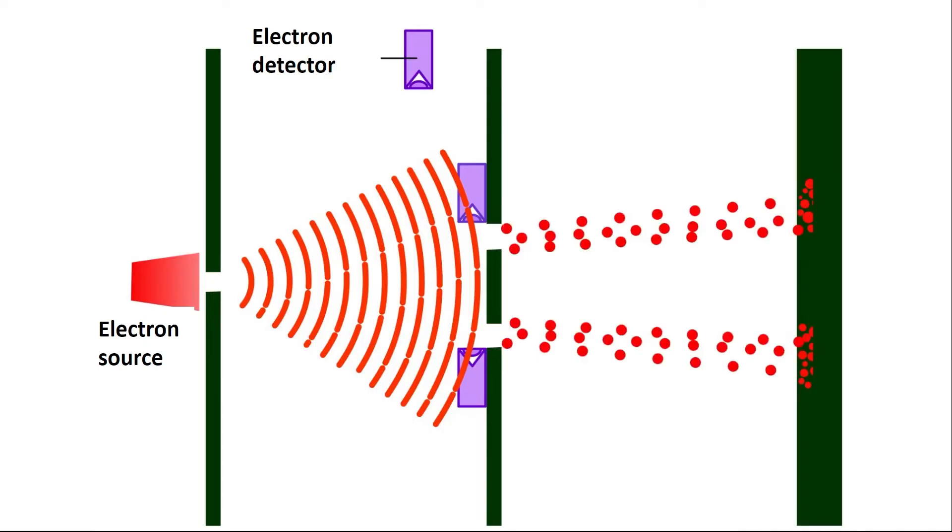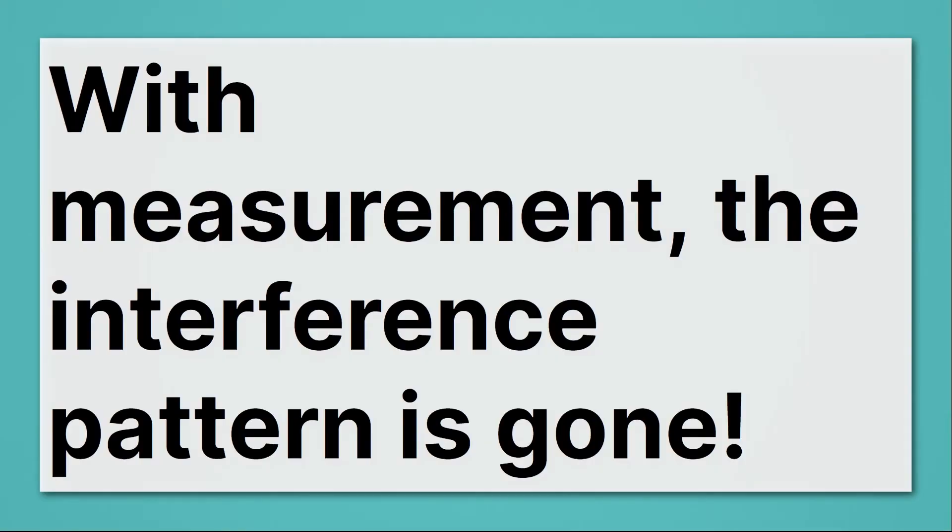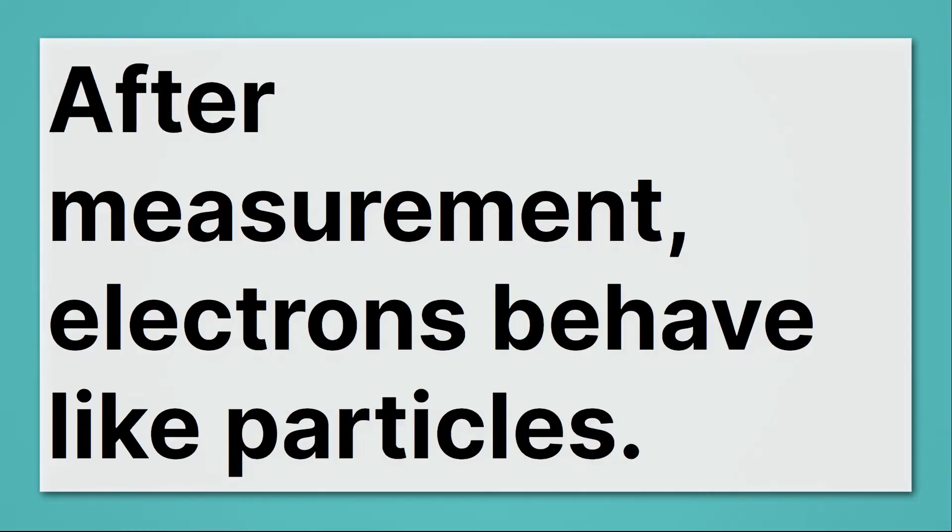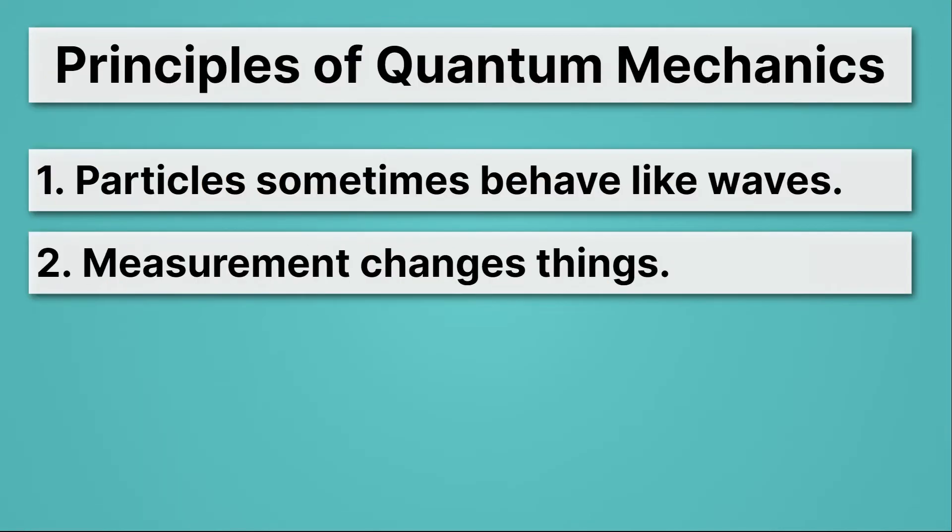But then the interference pattern goes away. Now what we see is very much what we'd expect if we just threw golf balls at two slits. They pile up just on the far side of the two slits. So with measurement, the interference pattern is gone. That means measurement is doing something crazy. Before measurement, electrons behave like waves. After measurement, electrons behave like particles. That's wacky. That's quantum mechanics.